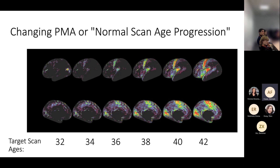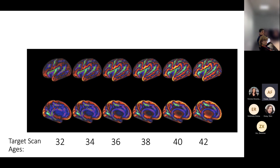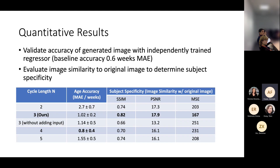On the task of changing PMA — normal scan age progression — we generate really nice images. Qualitatively they match quite well with the desired scan age, and that's for myelination. For sulcal depth, pretty good as well, except maybe at the very lower end — there are far too many folds here; it hasn't really managed to delete folds as it should. It's struggled a little bit but done okay. The best way to analyze this is with a quantitative analysis.